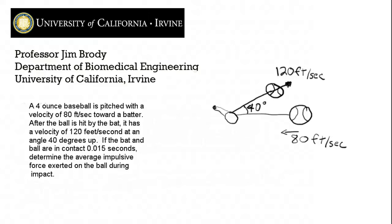This is a problem involving the principle of impulse and momentum. A 4-ounce baseball is pitched with a velocity of 80 feet per second toward a batter. After the ball is hit by the bat, it has a velocity of 120 feet per second at an angle 40 degrees up.